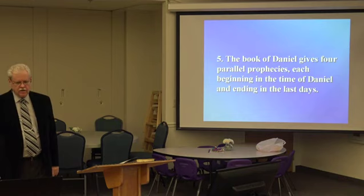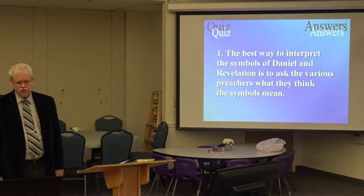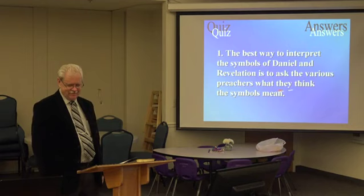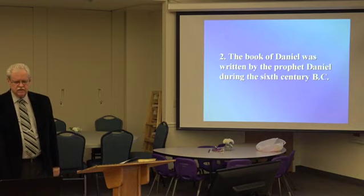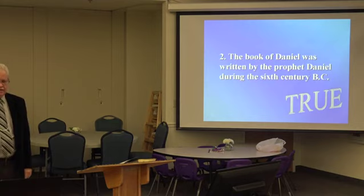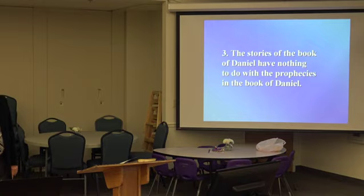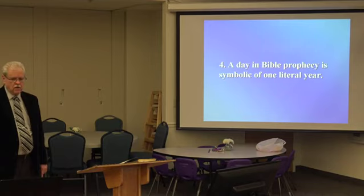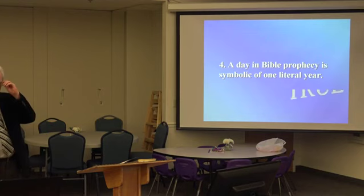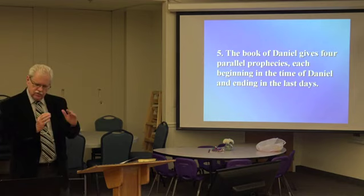Let's see how you did. Number one: the best way to interpret the symbols of Daniel and Revelation is to ask the various preachers — False. How do we learn what symbols mean? Let the Bible interpret the Bible — that's the key. Number two: the book of Daniel was written by the prophet Daniel during the 6th century B.C. — True. That's when Babylon came in. Number three: the stories have nothing to do with the prophecies — False; we learn a lot from the stories. Number four: a day in Bible prophecy is symbolic of one literal year — True. Number five: four parallel prophecies beginning at the time of Daniel, ending at the last days — True.